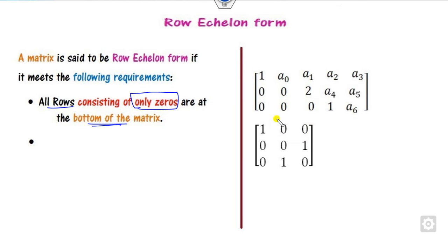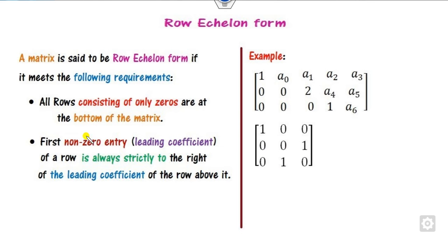Property number one: if any row consists of only zeros, then it should be at the bottom of the matrix. Looking at these two examples, is there any row which consists of only zeros? No. But if there is a row of all zeros, it must be present at the bottom of the matrix.